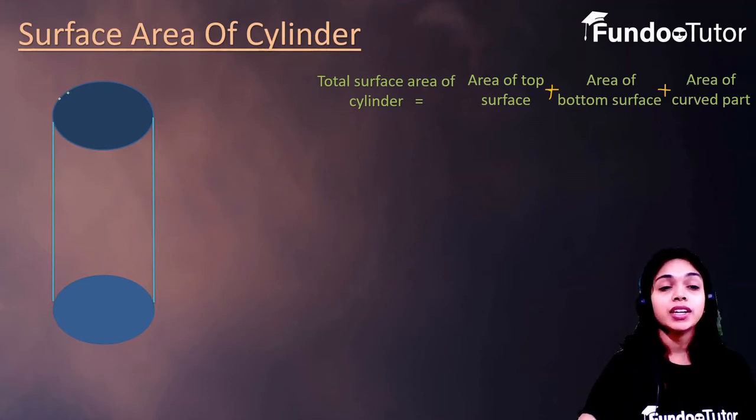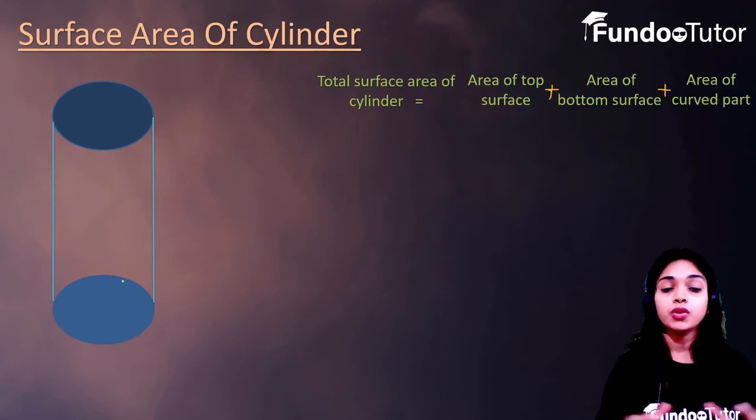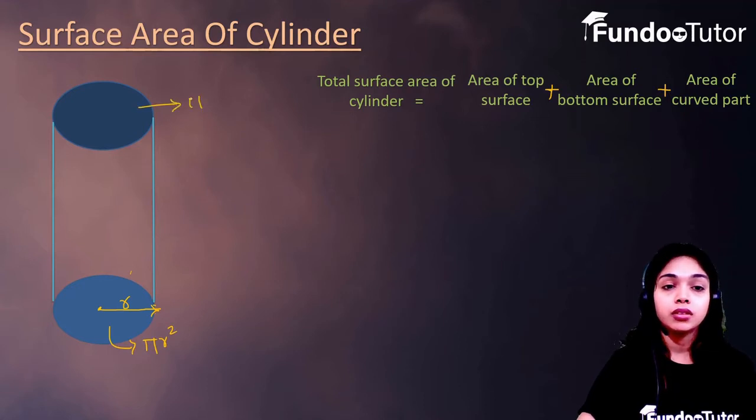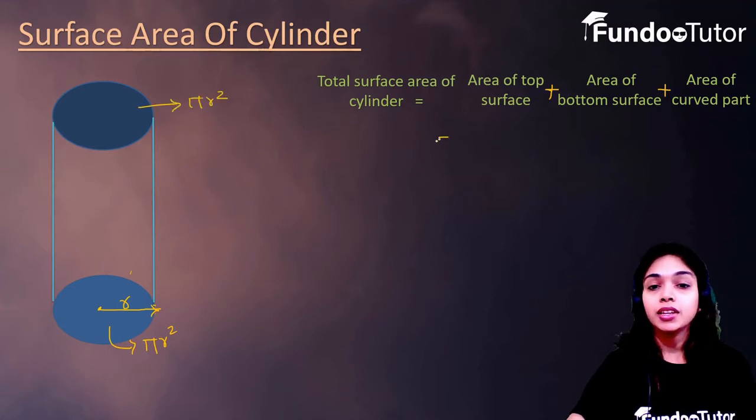So, we can easily find the surface area of top and bottom circular ends, because we know the area of circle. If the radius of circular bases are r, so the area of top and bottom surface is pi r square and pi r square. So, we can write this area of top surface is pi r square, plus area of bottom surface is pi r square.